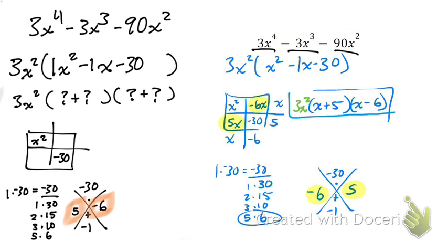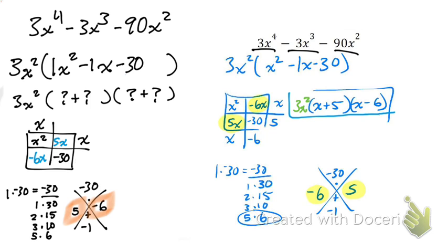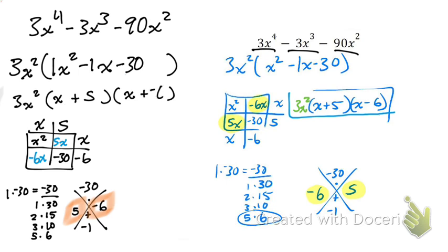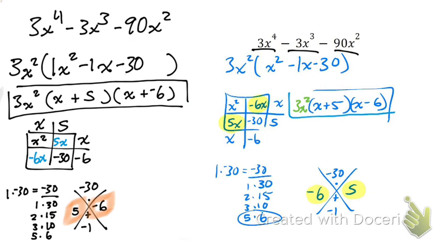So I write 5x and negative 6x in the two middle boxes — the order doesn't matter. Now solving the box: what GCF can I take out of both? The answer is x. Then x times x gives x squared. What times x gives negative 6x? Negative six. What times x gives positive 5x? Five. So I write those into the binomials: x plus 5 and x minus 6. I'll box my answer so it's clear.